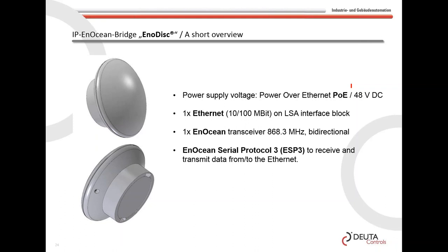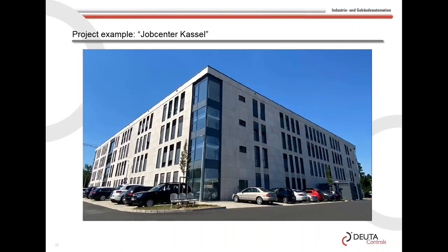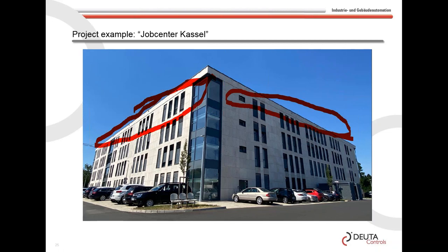Using standardized protocols for PLC interfacing — nothing Data Controls-specific — you can scale from a small office to a large building. For example, a job center in Kassel: four floors, approximately 90 by 90 meters, 250 single offices. We controlled not only lighting but also outside blinds using EnOcean-based engines. The system uses standard EnOcean controllers with one light switch per room — a double rocker for lights and blinds — plus seven Anodisc units distributed around the building.